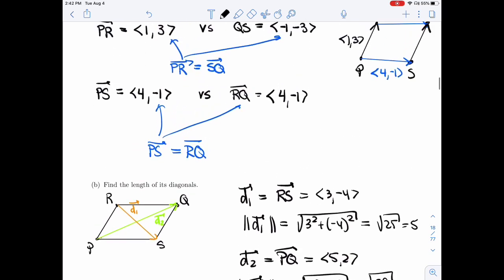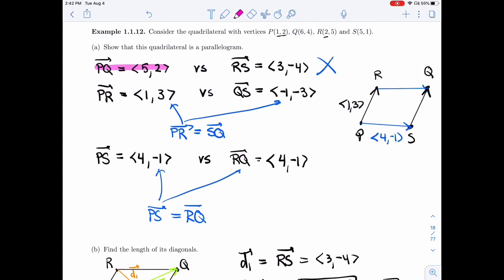And notice that here, that first couple of vectors that weren't equal, that's because they were not sides, they were the diagonals of the parallelogram, and those don't need to be parallel or have the same length.